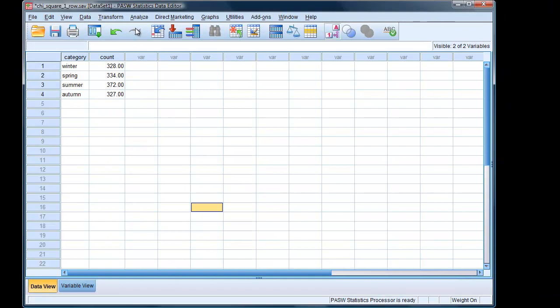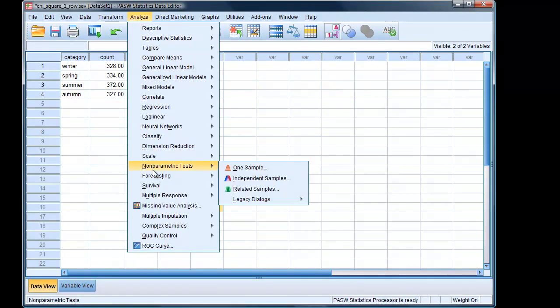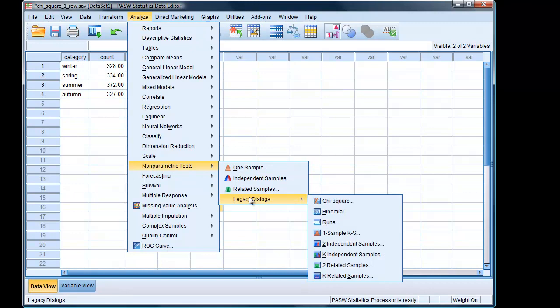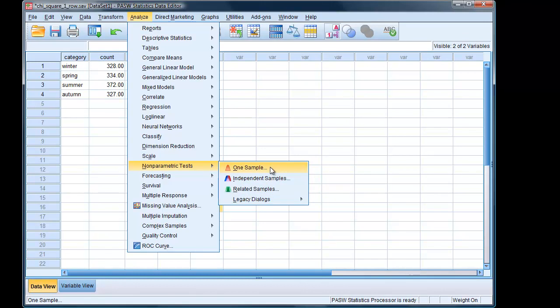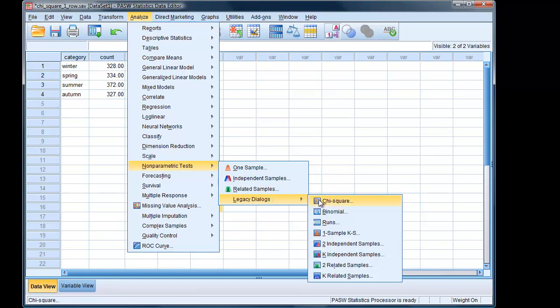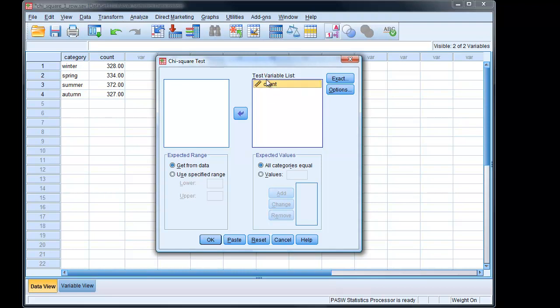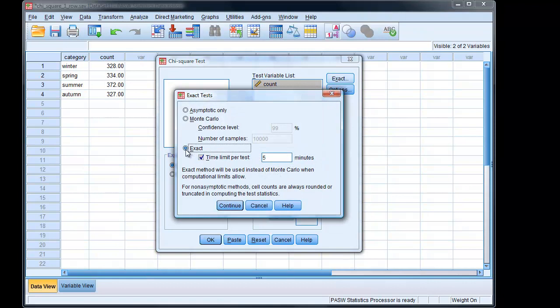To carry out the analysis, we go to Analyze, Non-Parametric Tests, Legacy Dialogues, Chi-Square. We could also have chosen the one sample there, but that leads to the newfangled multiple dialogues. It's actually easier to do it this way. Chi-Square. And we want the count variable as our test variable. And we're saying expected value is all categories are equal. We are using a uniform distribution. So all categories are equal. And then we're going to ask for an exact value.